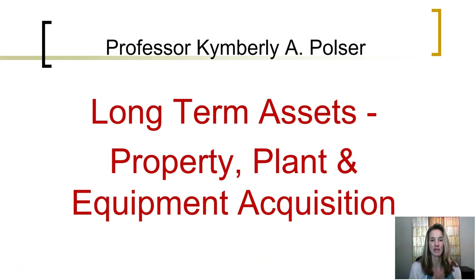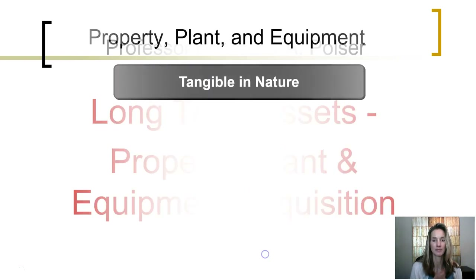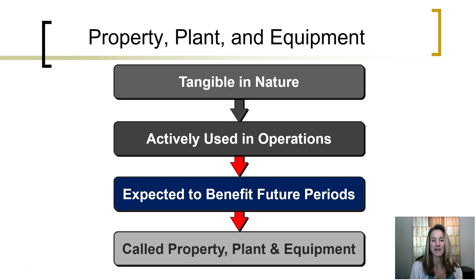This segment is going to discuss the accounting for the acquisition of long-term assets — property, plant, and equipment. Plant assets are assets that the company purchases that are tangible in nature. In other words, you can see them, feel them, touch them. These assets are actively used in daily operations. They are expected to not only benefit the period in which the asset is purchased, but also future accounting periods. We call all of these assets property, plant, and equipment.